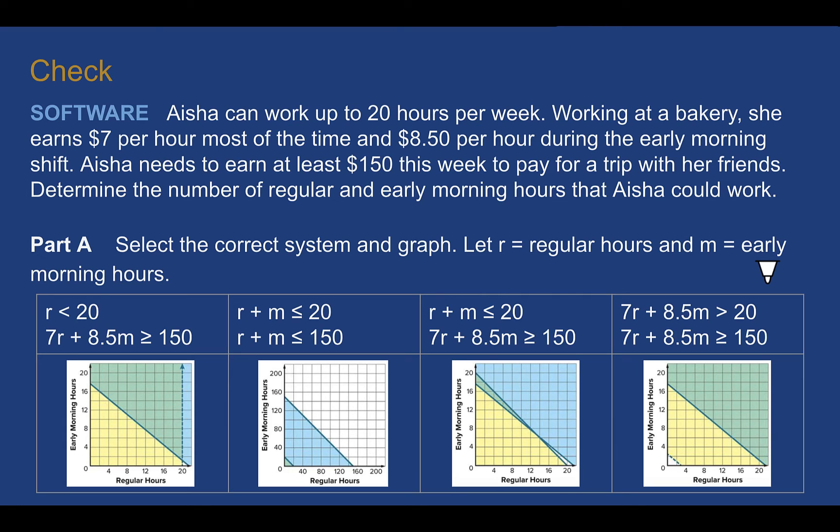Check your understanding, read through the situation and select the correct system and graph. The system that's shown is the graph that is right below it. So you do not have to pick one and then choose a different graph. Whatever the system is, pick the graph below it. Pause the video now and complete the check.